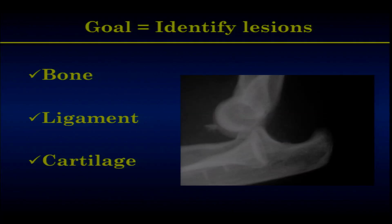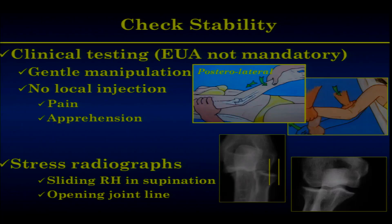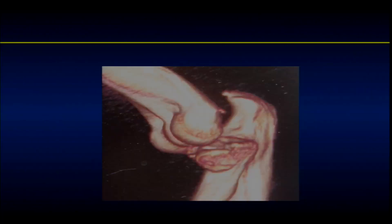You check bone, ligament, and potentially cartilage. The clinical testing must be gentle and does not need local injection or anesthesia. Look for apprehension — you don't have to try to dislocate it. Like a shoulder apprehension test: if the patient says 'you're going to move away,' you stop. This way you can identify posterior lateral rotatory instability, valgus, or varus instability. If unsure, you can make stress radiographs to check for joint line enlargement on the medial side or posterior subluxation of the radial head. In my experience, there is no place for CT scan in emergency.